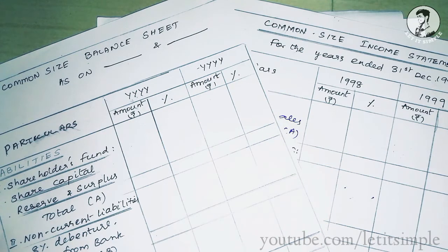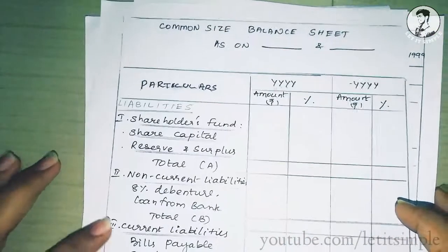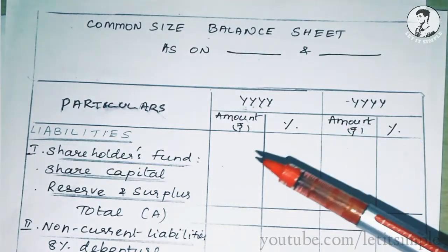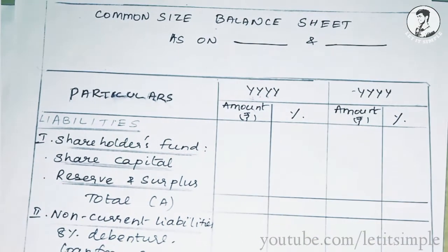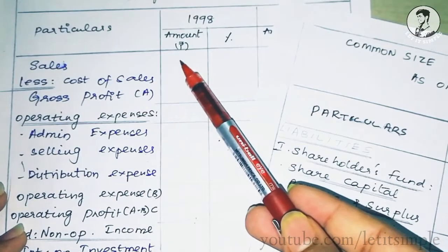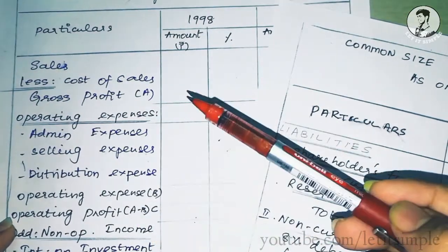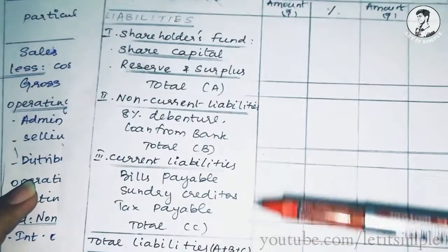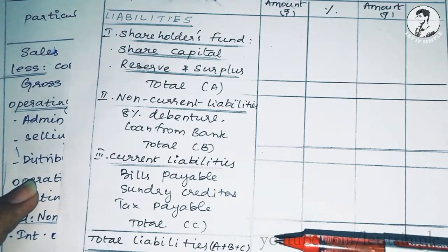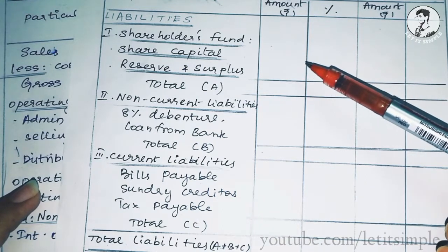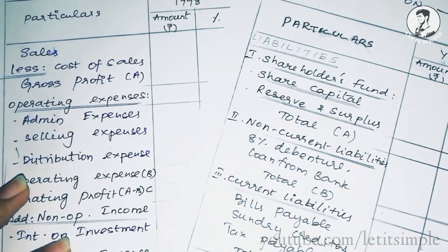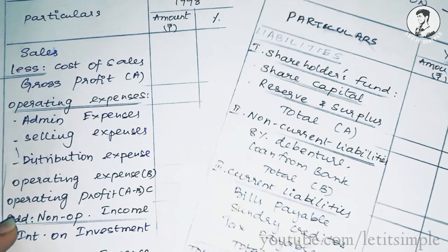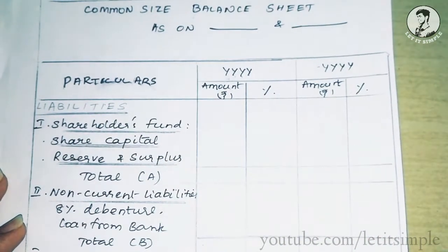It is very simple. How do we compare the comparative statement? We will compare left to right and compare the percentages. In the common-size statement, we will compare the income statement — comparing right to right and left to right.